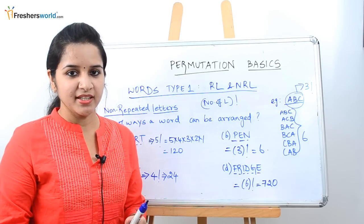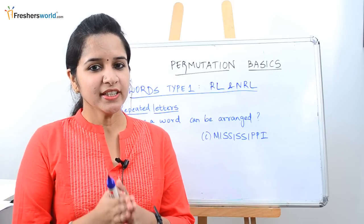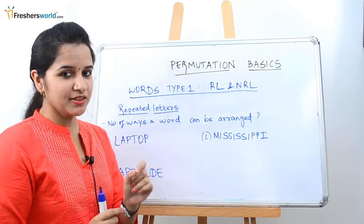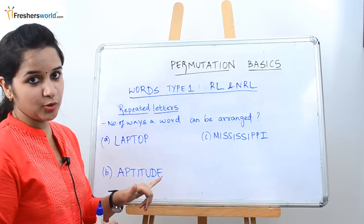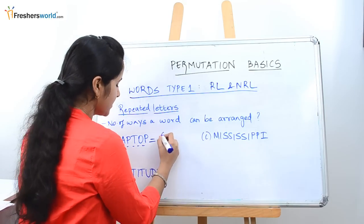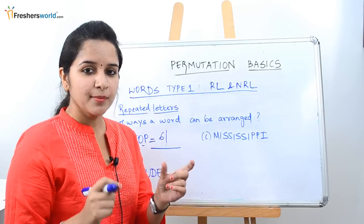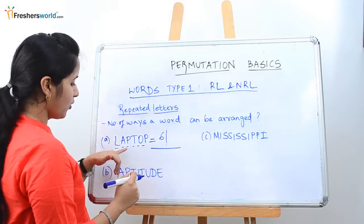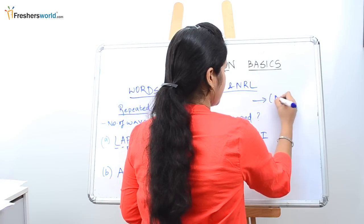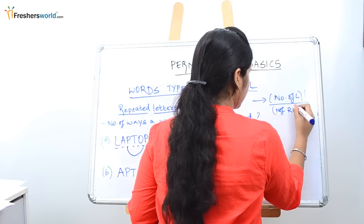The next type is repeated letters. In the last concept we dealt with non-repeated letters; now we deal with repeated letters. For non-repeated letters we took the number of letters and the factorial of it. For repeated letters we do something similar with a minor change. Take the word LAPTOP — six letters. We do six factorial divided by the repeated letters factorial. P is repeated twice, so we divide by two factorial. The formula is: number of letters factorial divided by number of repeated letters factorial.